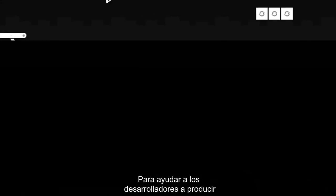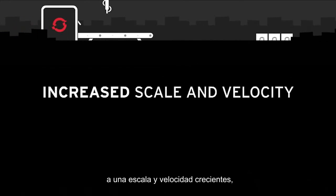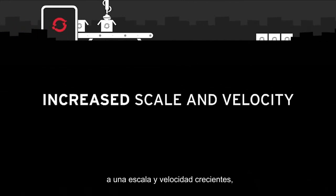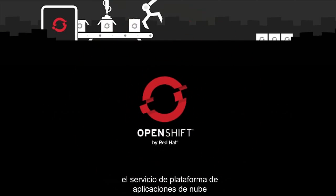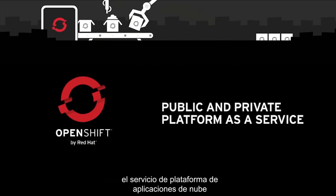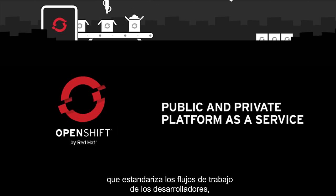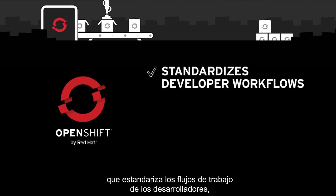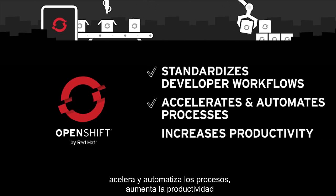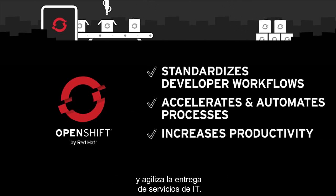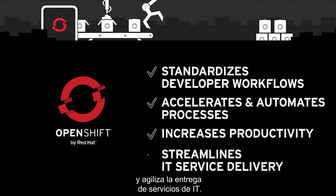To help developers produce at this increased scale and velocity, OpenShift by Red Hat offers a cloud application platform as a service that standardizes developer workflows, accelerates and automates processes, increases productivity, and streamlines IT service delivery.